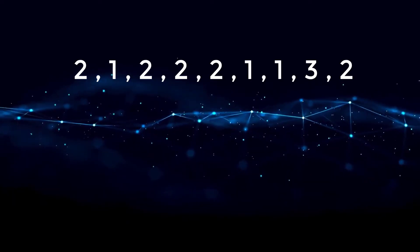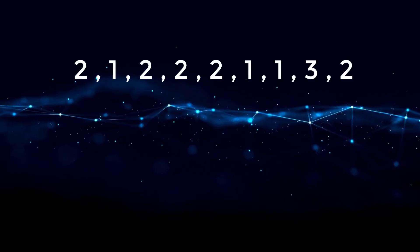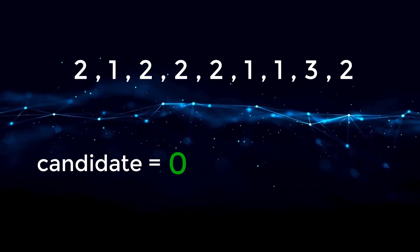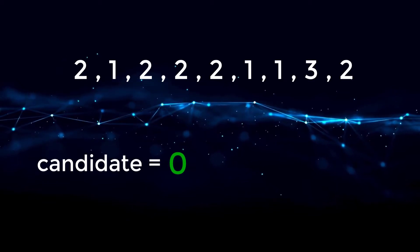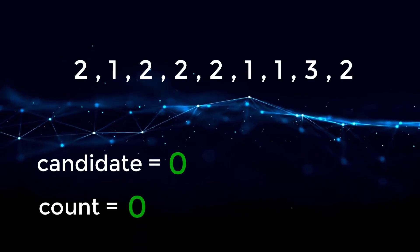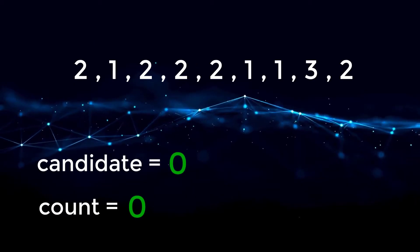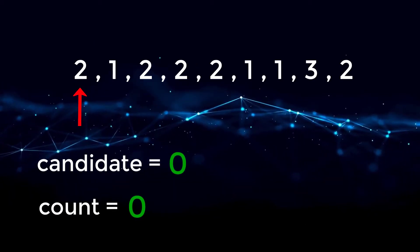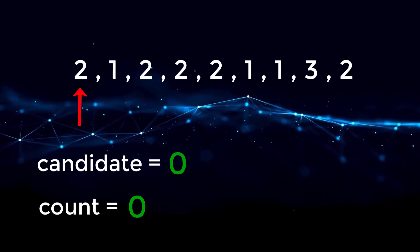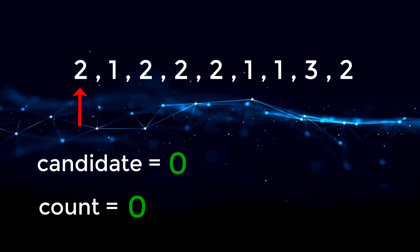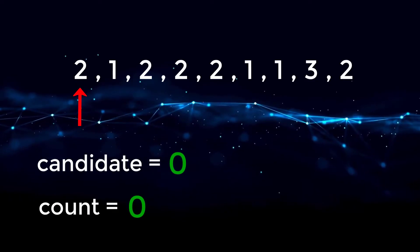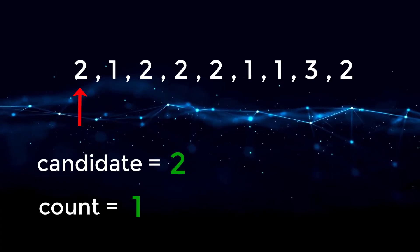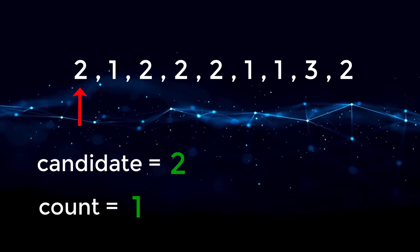To solve this problem, we're going to initialize two different variables. The first one is called candidate, which is the element we are considering as the majority. And then another variable called count, which is the number of times we have seen the candidate. Starting at index zero, we're going to loop over our array. Since our count is zero, we take the number two at index zero as our candidate, so candidate is two and count becomes one.